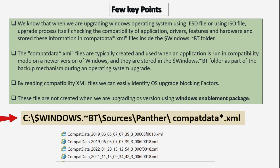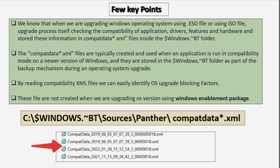The location of this compatdata.xml file is under the C drive in a hidden folder called $Windows.~BT. Within that we have to go to the Sources folder, then the Panther folder, where we have multiple compatdata.xml files. By reading these files we can easily identify which application or driver is causing the upgrade to fail.